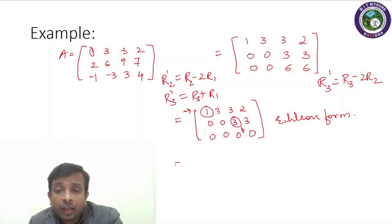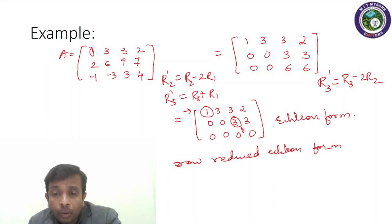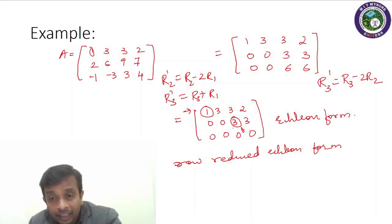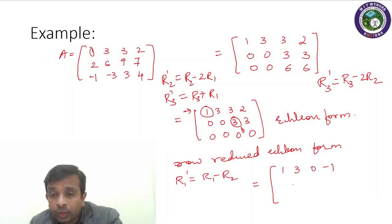To obtain the row reduced echelon form, the entries above each pivot must also be zero, so the pivot should be the only nonzero element in its column. Applying R1' = R1 minus R2: 1 minus 0 = 1, 3 minus 0 = 3, 3 minus 3 = 0, 2 minus 3 = minus 1. Row two remains 0, 0, 3, 3 and row three is 0, 0, 0, 0.